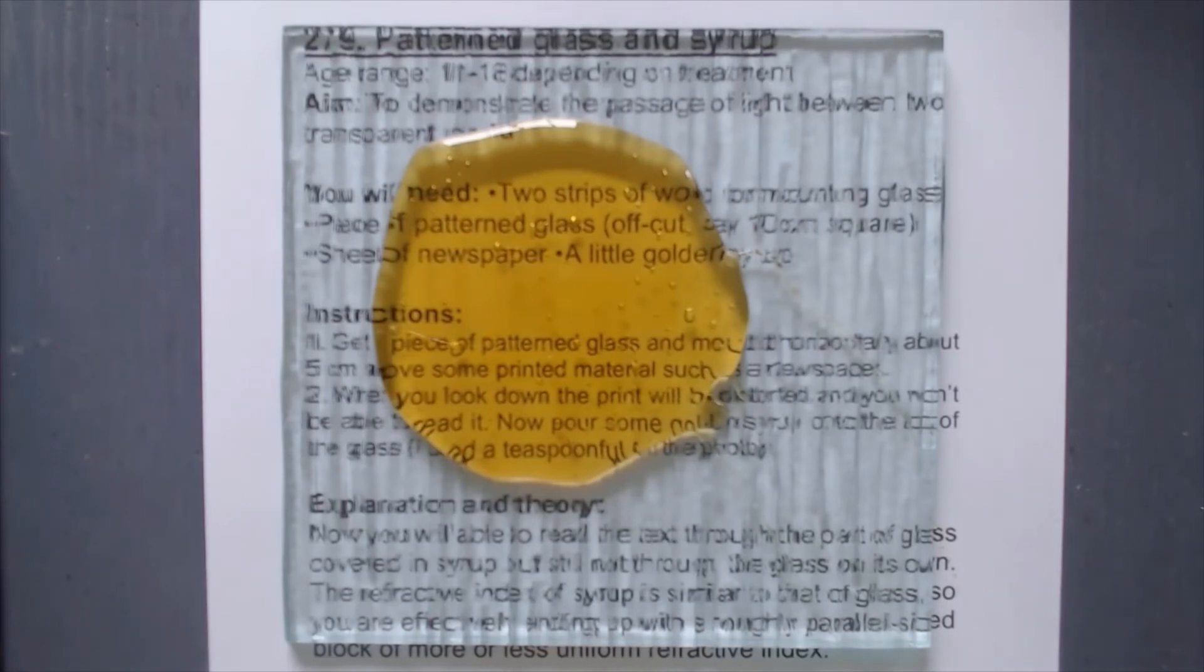And the other thing, the more interesting thing, is the speed of light in glass and syrup. Now because the refractive index is about the same in glass and syrup, it means there's no refraction boundary.